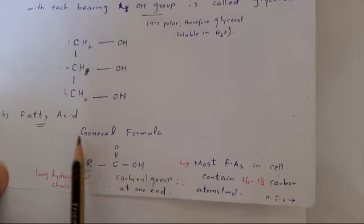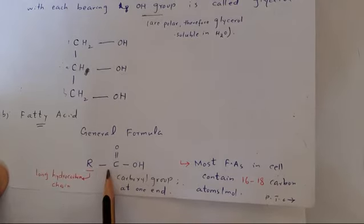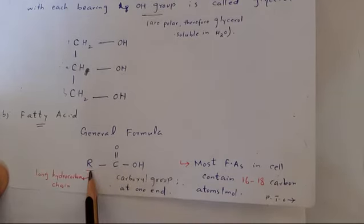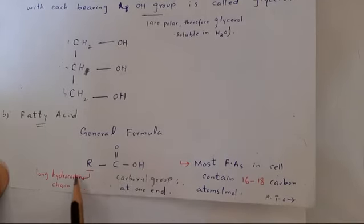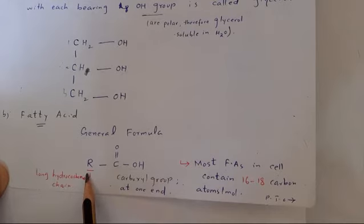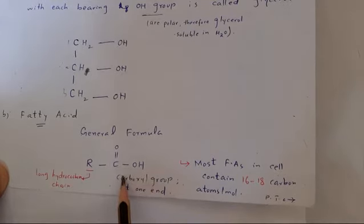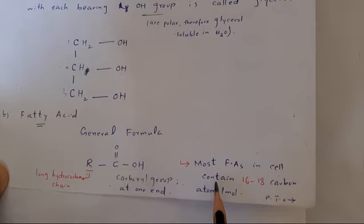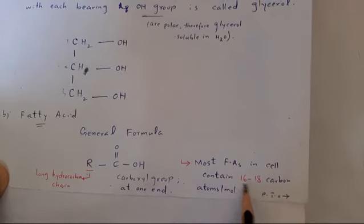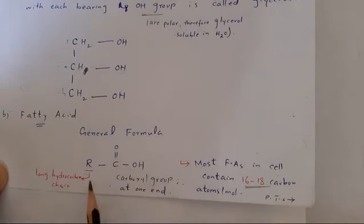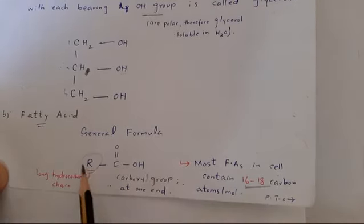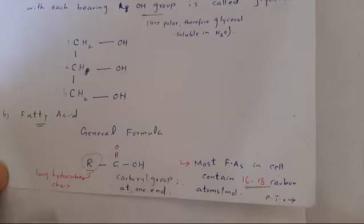What is a fatty acid? The general formula of fatty acid is R-COOH. COOH is carboxyl group and R is a long hydrocarbon chain. Fatty acid consists of a long hydrocarbon chain with carboxyl group at one end. Most fatty acids in cells contain 16 to 18 carbon atoms.